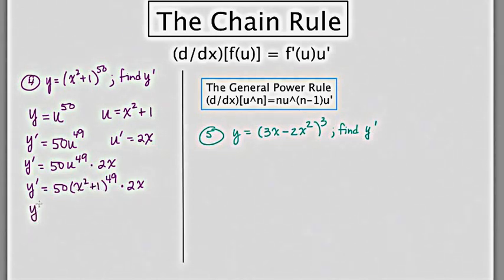And cleaning up the first or the beginning and the last factors, we get 100x times x squared plus 1 to the 49th power.